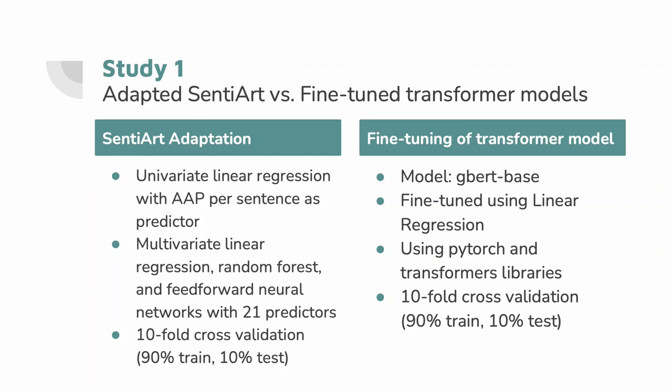To fine-tune transformer models, we used one of the most basic models available for German language: GBERT base. We fine-tuned it using a simple linear regression with Python libraries like PyTorch and Transformers. Being also a machine learning approach, we again performed 10-fold cross-validation, keeping 90% of the materials to train and 10% to test.